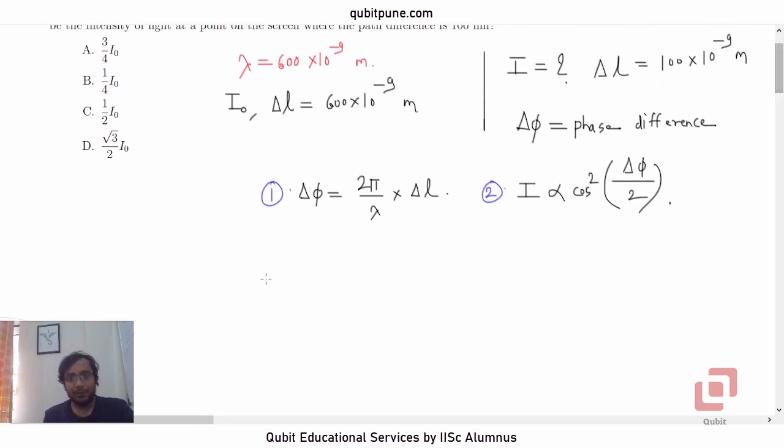What we are now going to do is we are going to take the ratio of I to I0, and for that we will need cos squared delta phi by 2 for the intensity I and delta phi by 2 for the intensity I0. So let us write 1 upon 2 here in both cases.